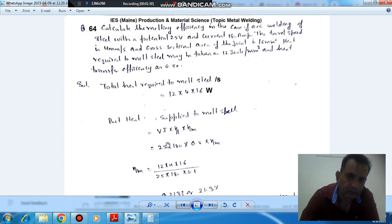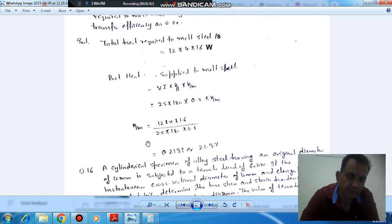So that will be 25 times 180 times heat transfer efficiency 0.8 times melting efficiency. We equate these two equations.